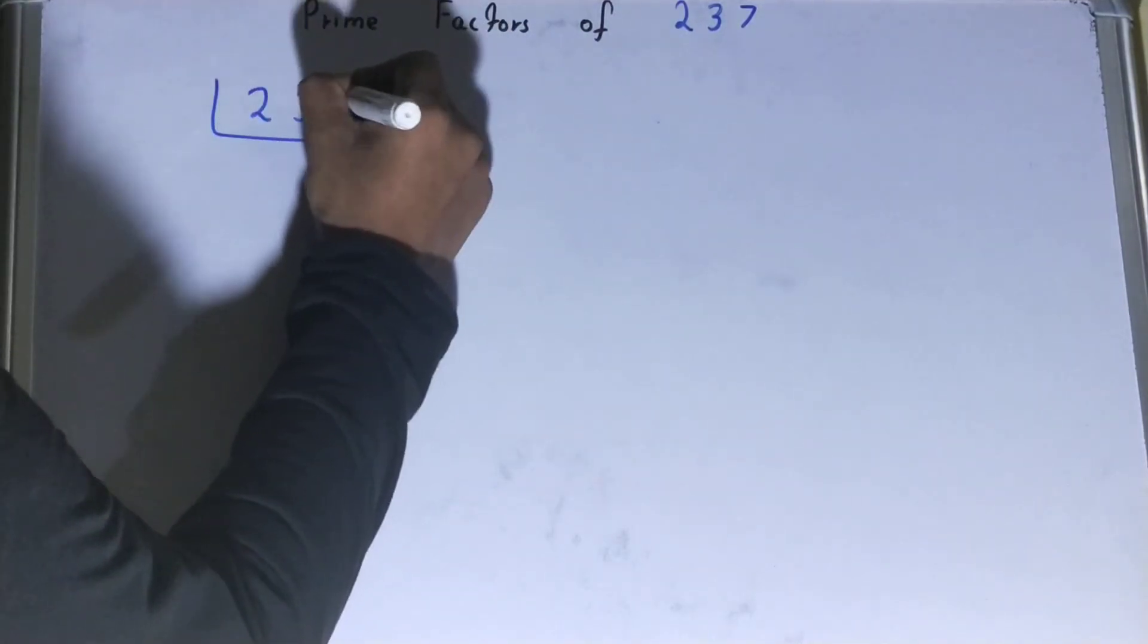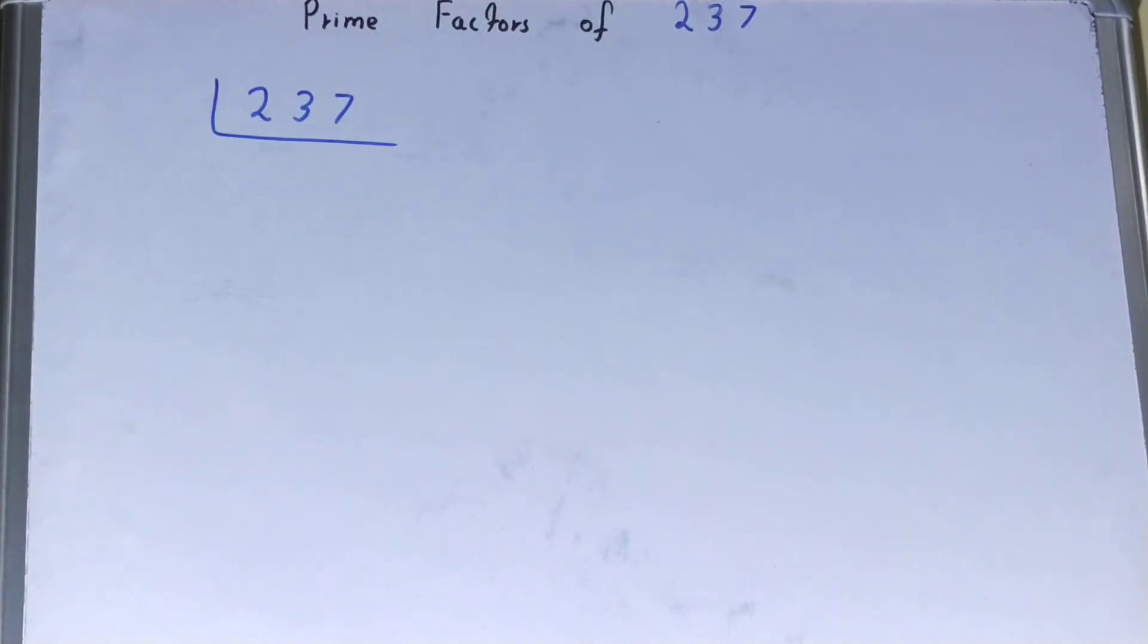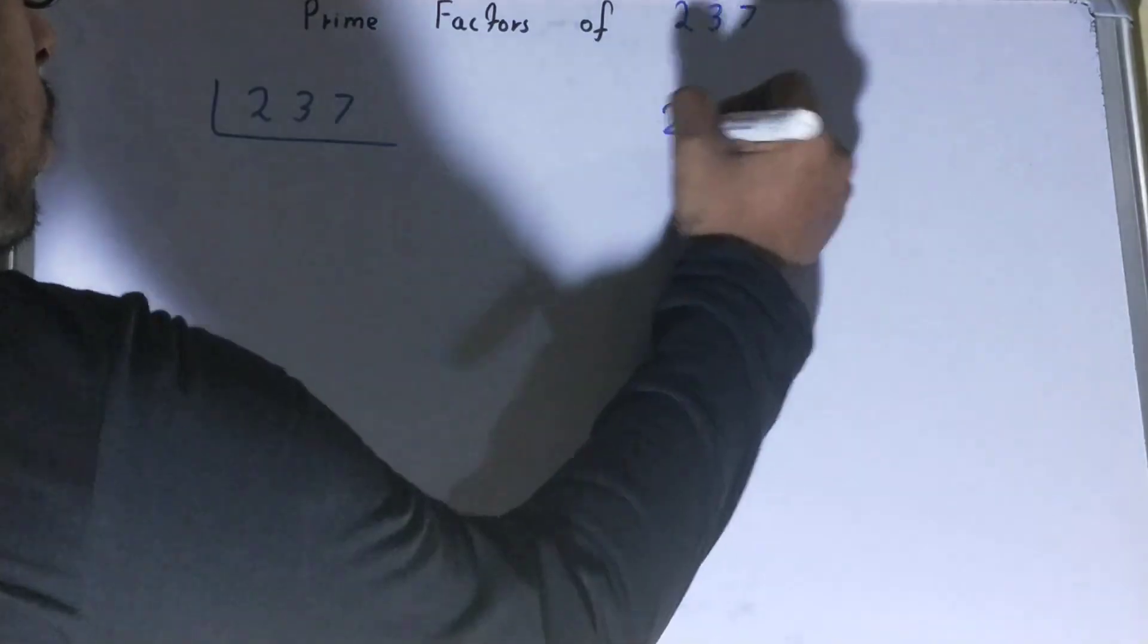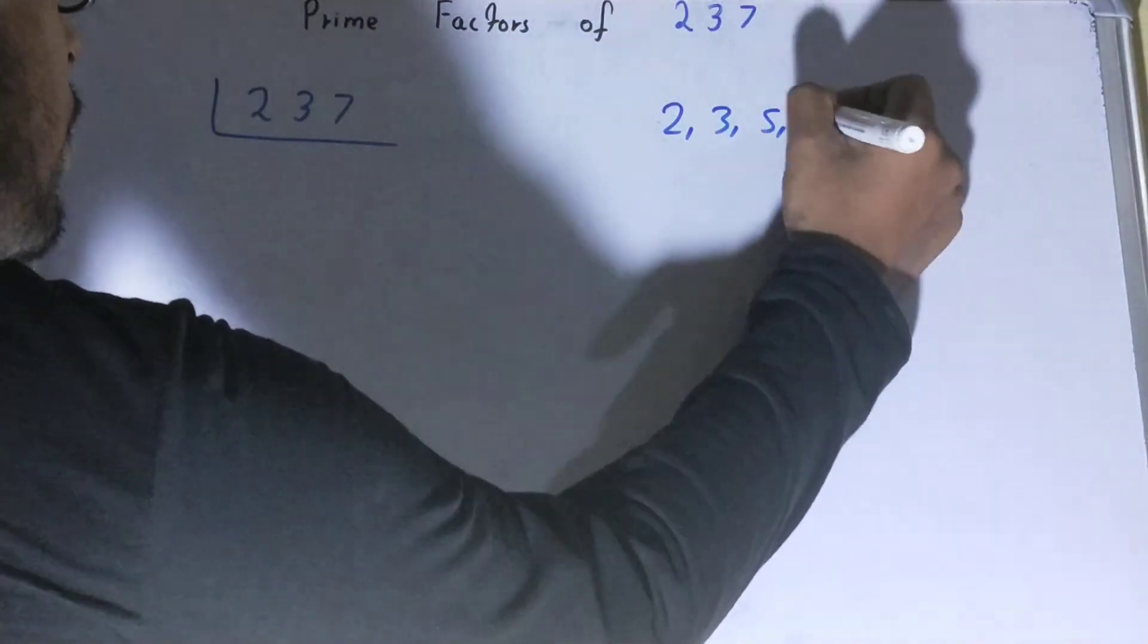Once you are done with that, before solving this you must have an idea about what prime numbers are. Prime numbers are numbers that are divisible by one and themselves only, like 2, 3, 5, 7, and so on.